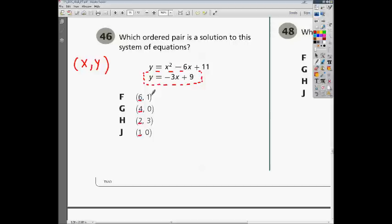So for choice F, if you plugged in your 6, you would have 6 times negative 3, which should give you negative 18. But negative 18 plus 9 is negative 9. If we plugged in a 6, we should have gotten out a 1. We ended up getting out a negative 9. So that means that choice F cannot be correct.